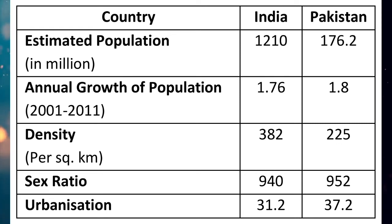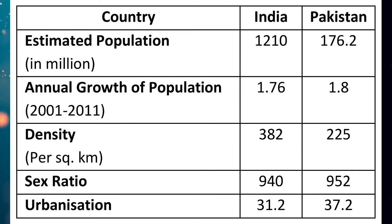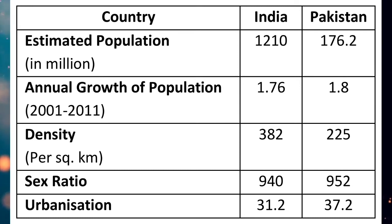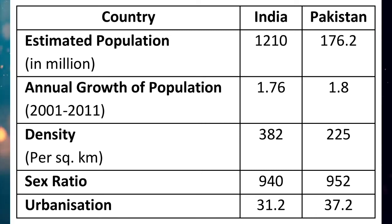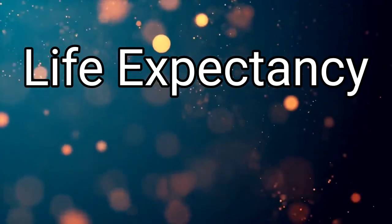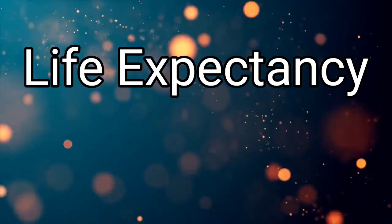Pakistan has succeeded in providing better job opportunities outside agriculture than India, which shows a better sign of urbanization in Pakistan. The sex ratio is 940 in India and 952 in Pakistan per thousand males — a low sex ratio indicates social backwardness. In summary: India has a higher population size but lower growth rate and lower fertility rate; Pakistan has a higher sex ratio and higher urbanization rate.